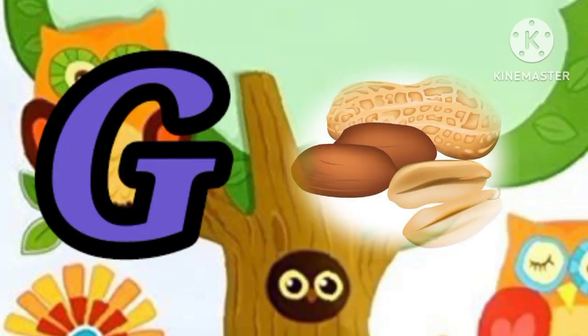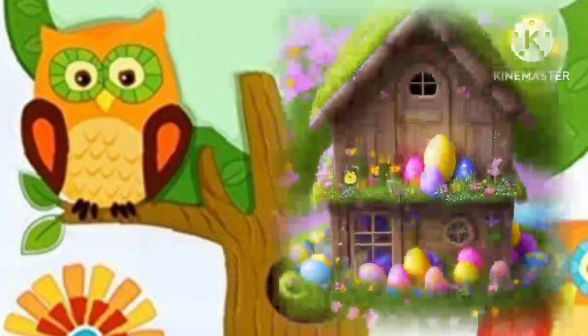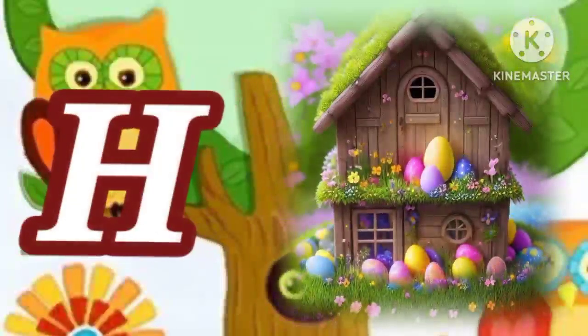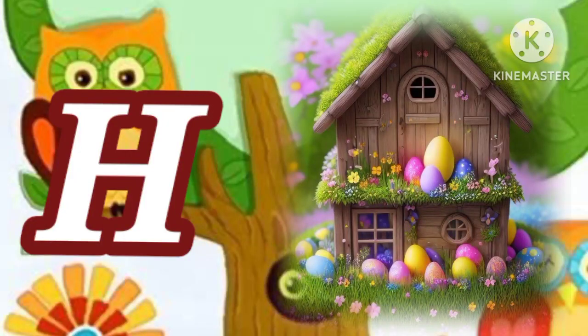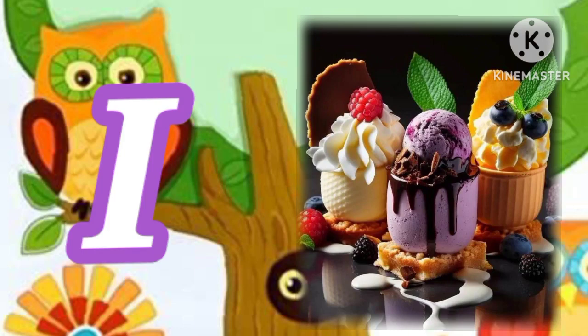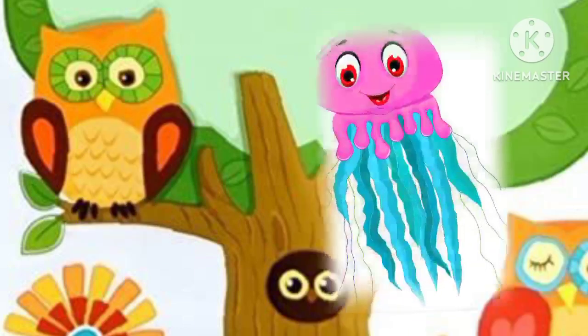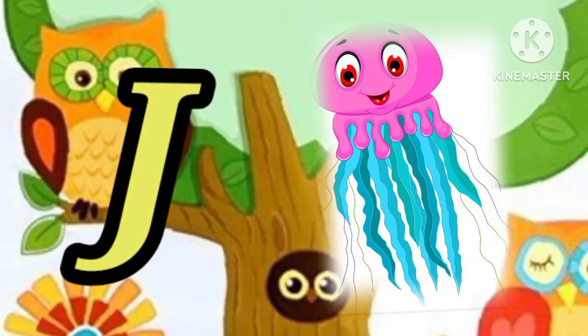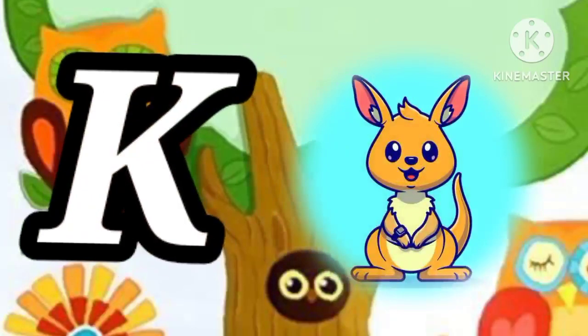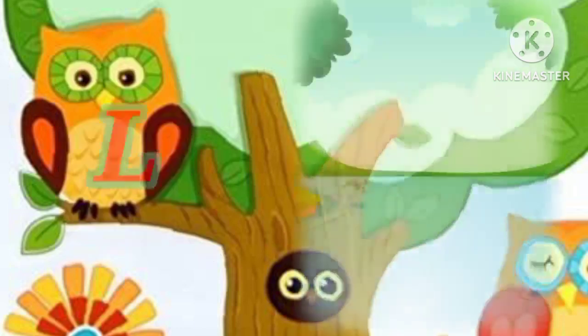G for donut, H for hut, I for ice cream, J for jellyfish, K for kangaroo, L for lake.